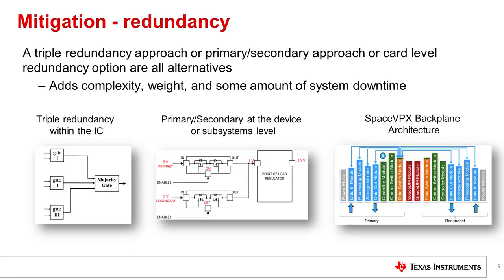For some devices that are designed for radiation from the start, they employ a triple redundancy approach within the IC itself to help mitigate these destructive single event effects. Another approach sometimes used in power tree architectures is to set up a primary path and a parallel secondary path with a smart load switch to switch between the two channels when necessary.